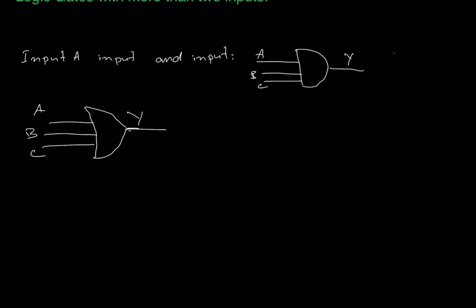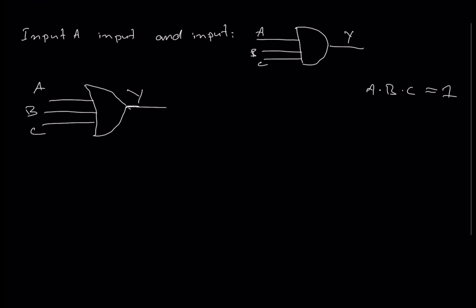Since we have three inputs, the truth table will have eight combinations. The AND gate will only be ON when A, B, and C are all ON. The OR gate will be ON when one, two, or all three of the inputs are ON. Let's draw a truth table to give a brief review.